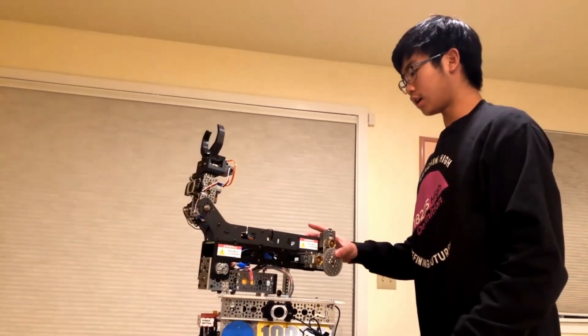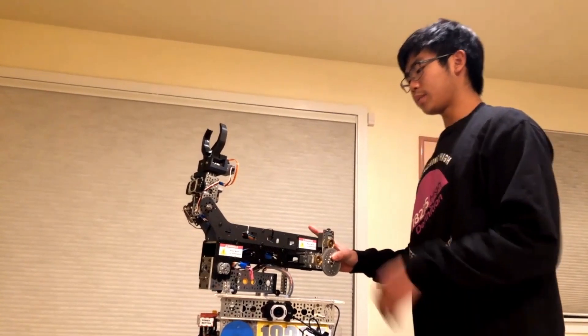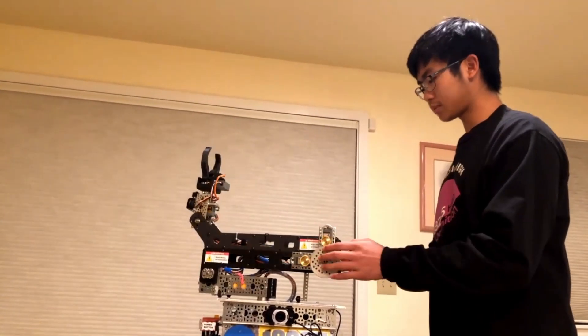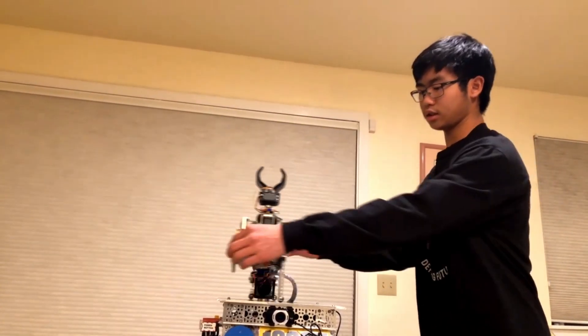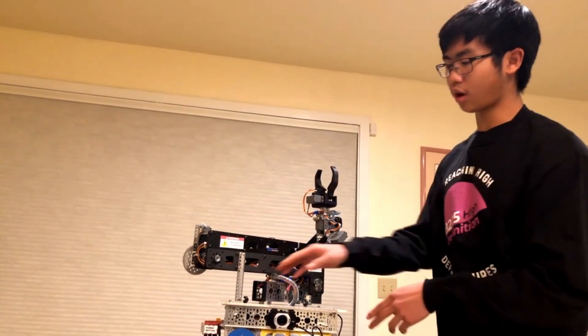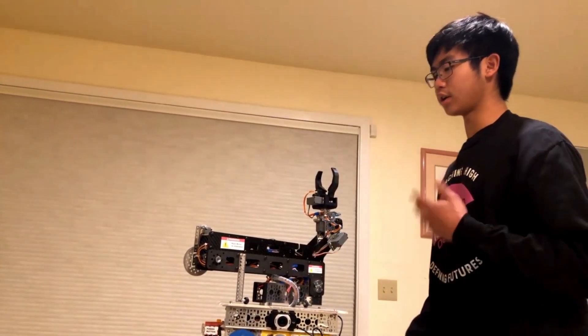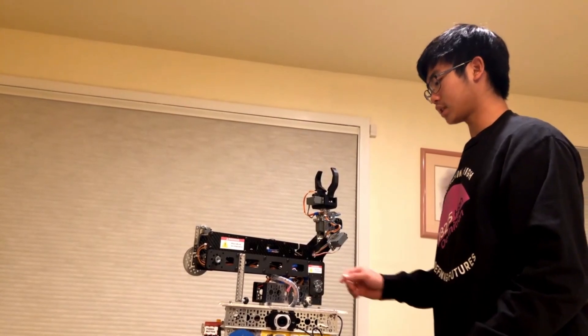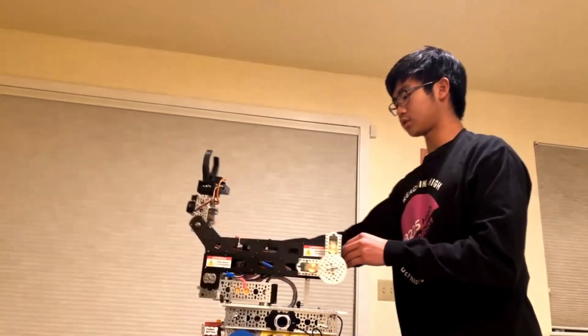For autonomous, we basically start at the same angle. So that's because we have this right here that allows you to put the arm all the way down. And then we have a set height for the start of autonomous. And we just take the arm forward.